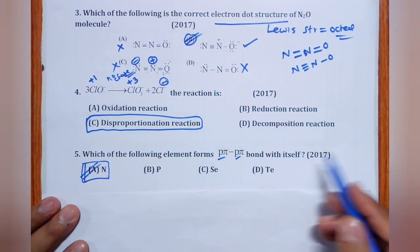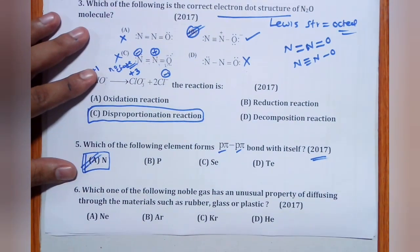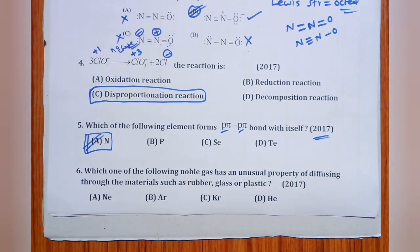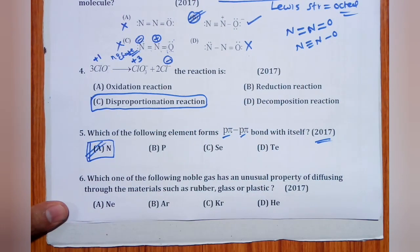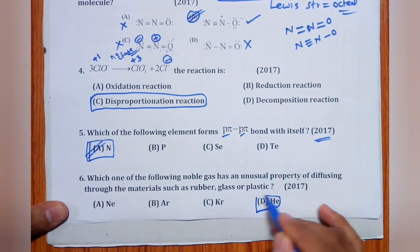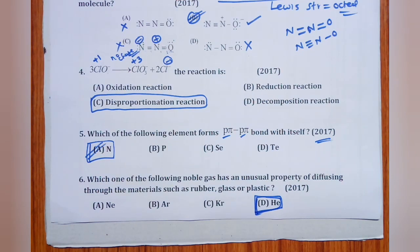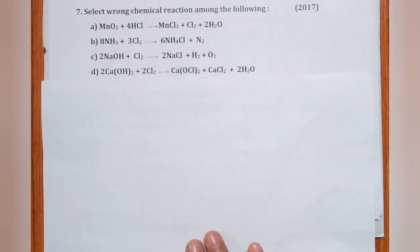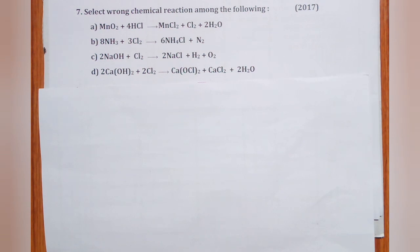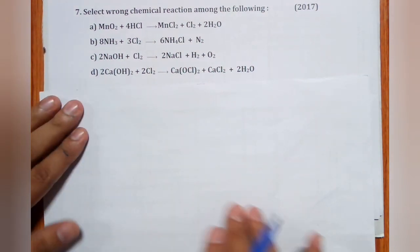Question 5 (2017): Which of the following forms p-π p-π bond with itself? For p-π p-π bonding, only a p-orbital is needed with no d-orbital. Therefore, the answer is nitrogen (N), since it has no d-orbital and can form p-π p-π multiple bonds. Question 6 (2017): Which noble gas has the unusual property of diffusing through rubber, glass, and plastic? The answer is helium.